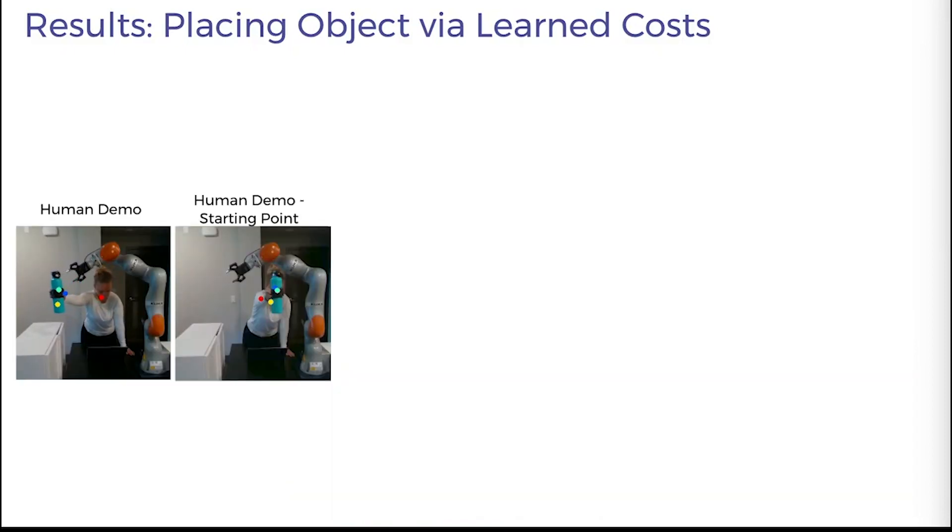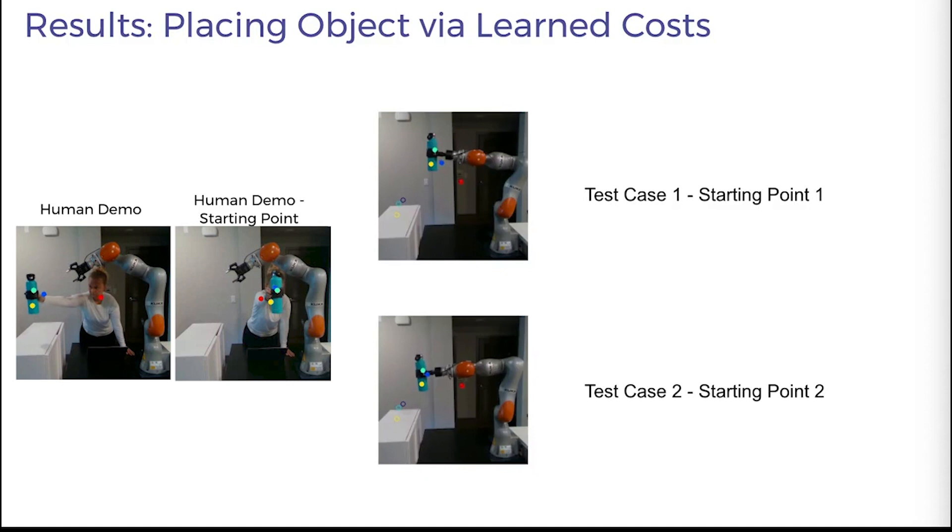We evaluate all of our learned cost parameterizations and the default cost baseline on two different test cases with two different initial robot configurations.